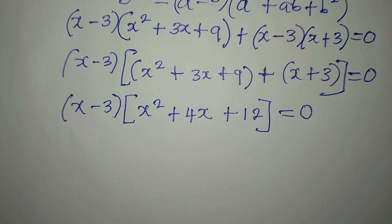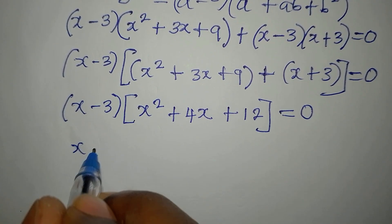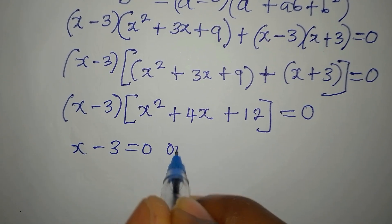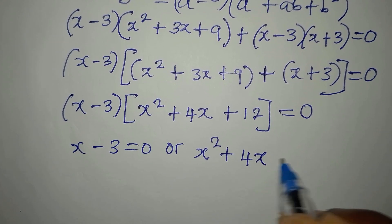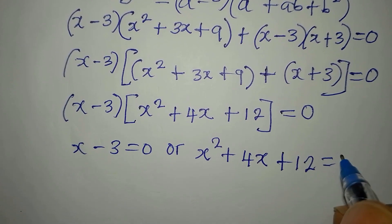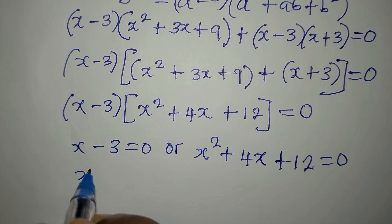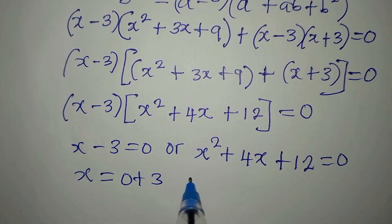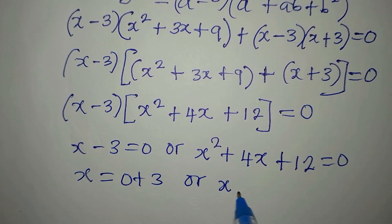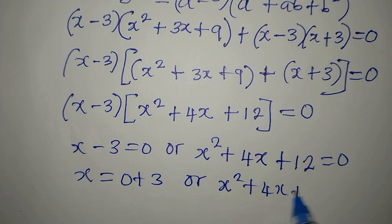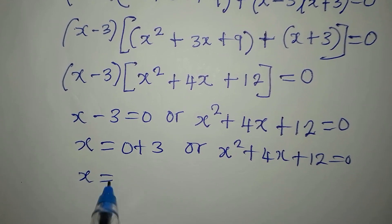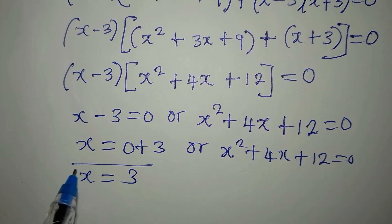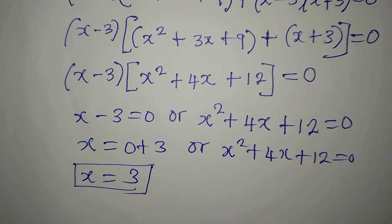We now apply the zero product rule: x minus 3 equals 0, or x squared plus 4x plus 12 equals 0. From the first factor, x equals 3. So x equals 3 is our real solution. Now let's go back and solve the quadratic x² plus 4x plus 12 equals 0.